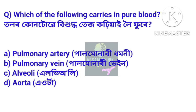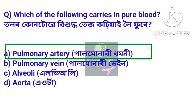Next question: which of the following carries impure blood? Tolor kunduye bichudha tes kuhiye loi phure? Answer: Pulmonary artery. Palmonari dhamoni — the pulmonary artery carries impure blood in our body.